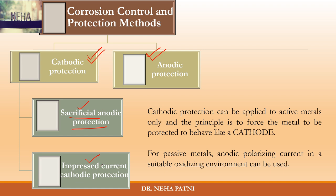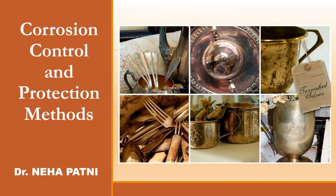In impressed current cathodic protection, you turn your metal into cathode by impressing current in the reverse direction, nullifying the corrosion current, so your anode becomes cathode and gets protected. I hope you're able to understand this type of corrosion protection method where you use current to help yourself. If you've understood the content, please hit like, subscribe for more videos, and mention in the comments if you'd like me to cover any topics.